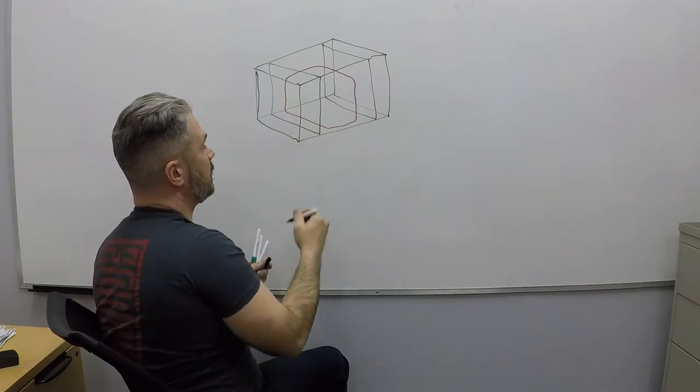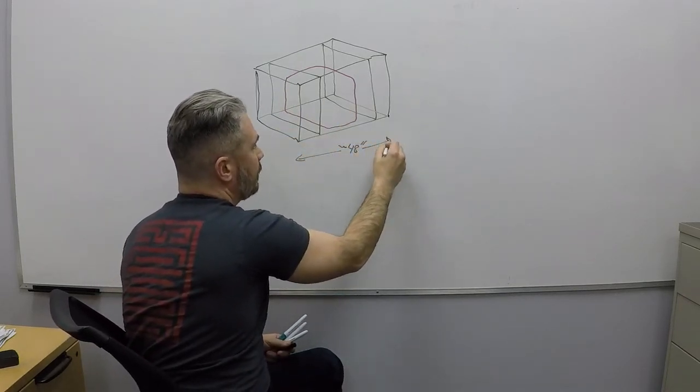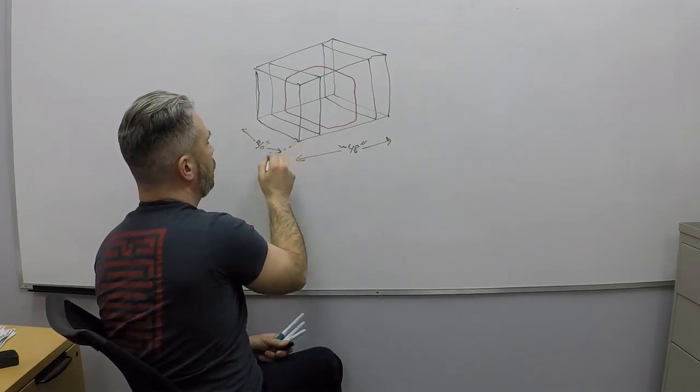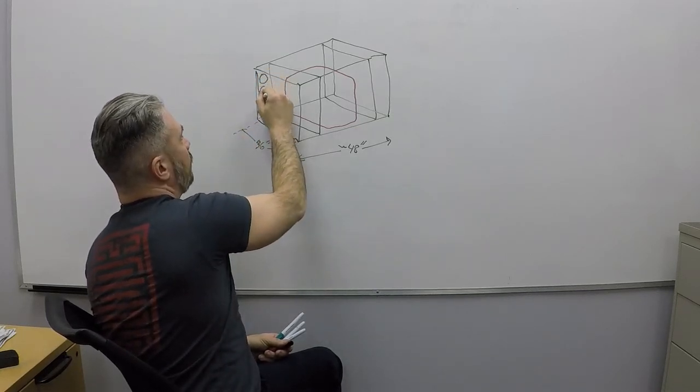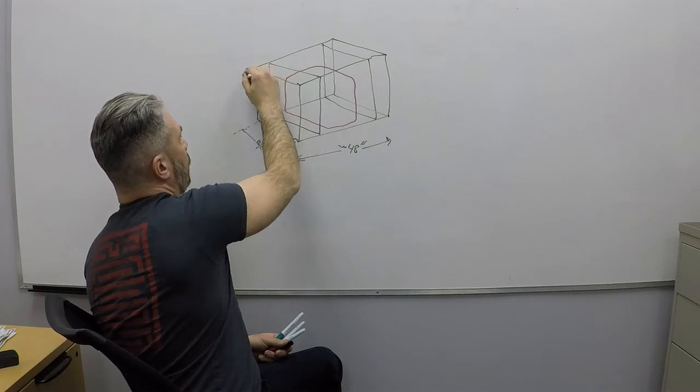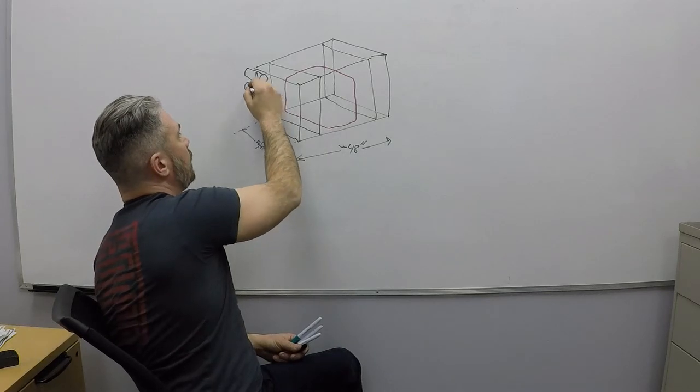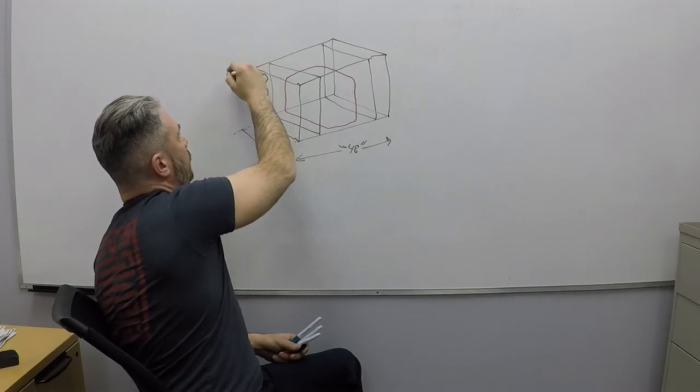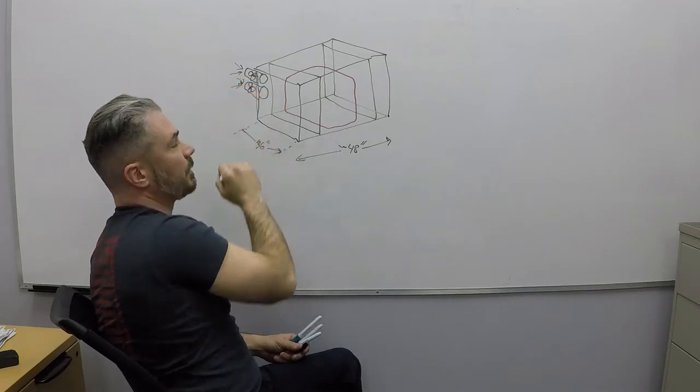This cabinet would be roughly four feet by three feet. It's going to have two ported four-inch ducts, each with a fan ported to the outside, accepting outside air.